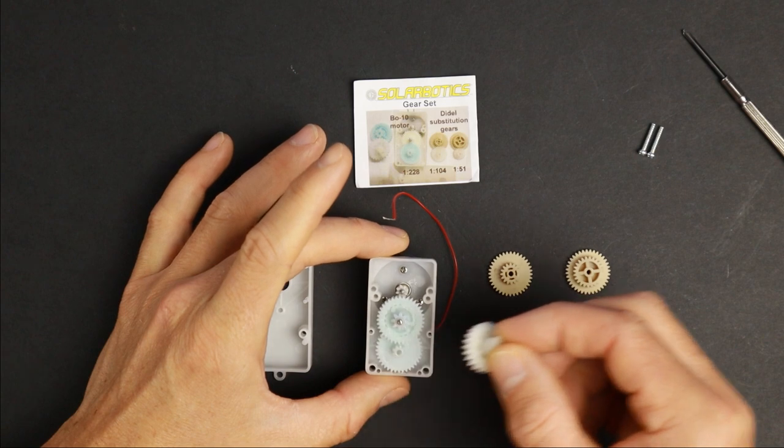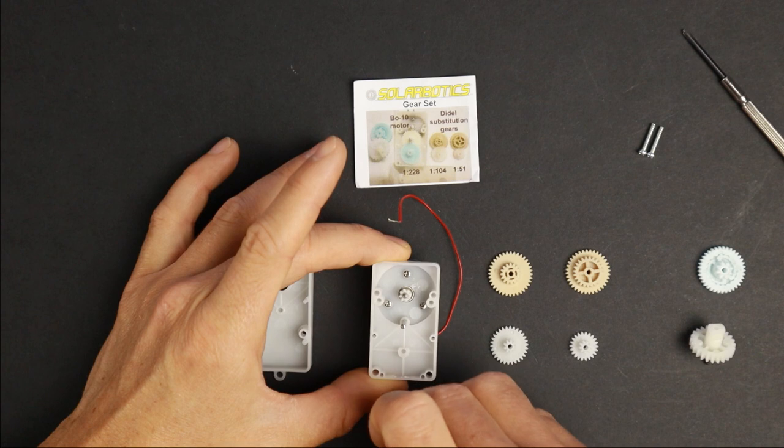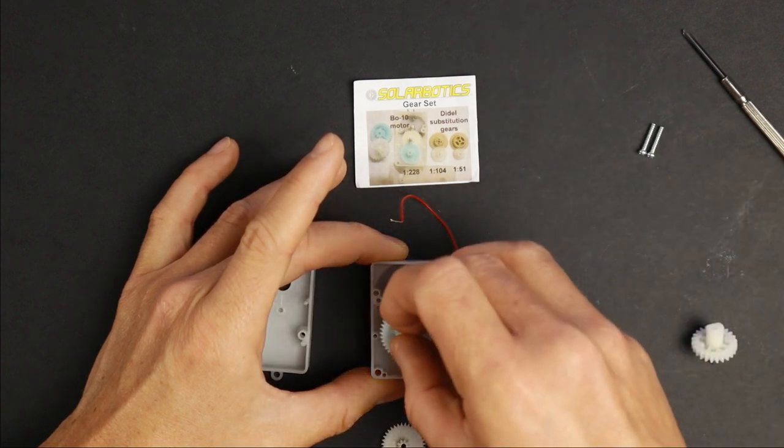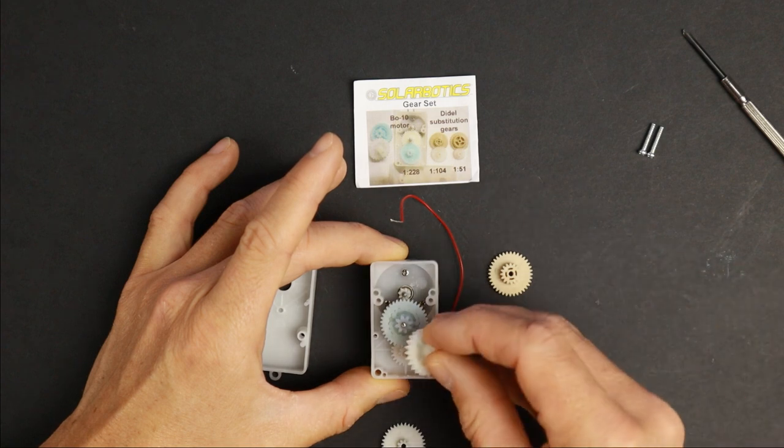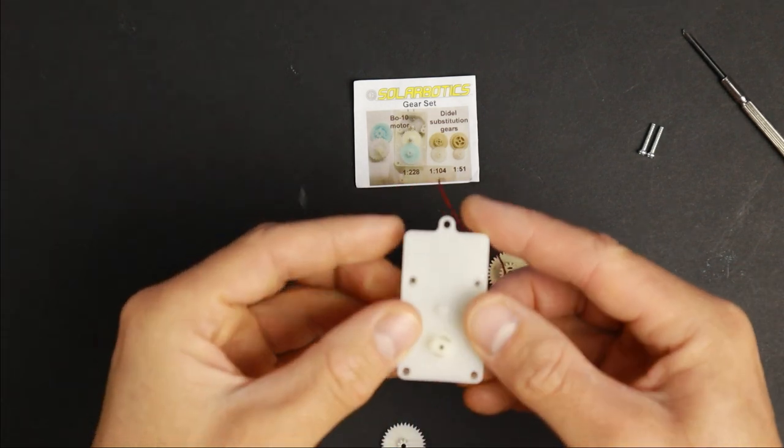A bigger speed boost is the possibility to exchange the gears of the motors, thus changing the transmission. These gears have to be ordered separately, a link is in the video description. The gears come with instructions. There are three transmissions to choose from. In the end, you get a pretty fast robot.